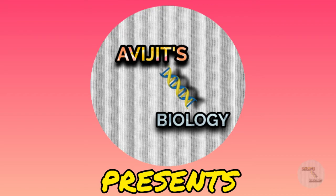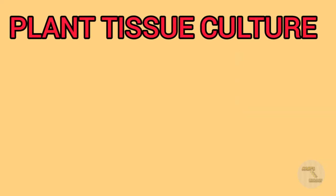Plant tissue culture refers to the in vitro cultivation of all parts of a plant — whether a single cell, a tissue, or an organ of a plant — done on a nutrient medium under aseptic conditions. In vitro cultivation means cultivation done within the glass, i.e., within a test tube.